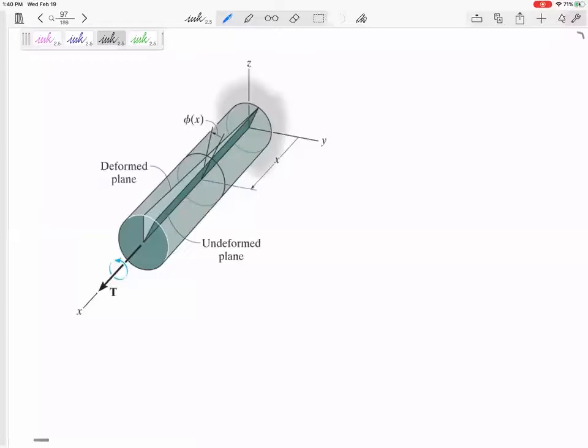If I drew a black line on this and I twisted this, that black line would kind of move and it would kind of go at this angle. It would change by this angle. Let's call this gamma.